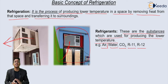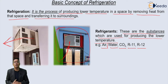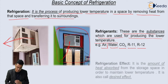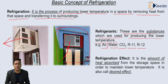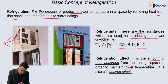With the help of these refrigerants, a window AC or any refrigeration system will take heat from the room and transfer that heat to the surrounding. Now let's move ahead to refrigeration effect — it is the amount of heat absorbed from the storage space in order to maintain lower temperature.